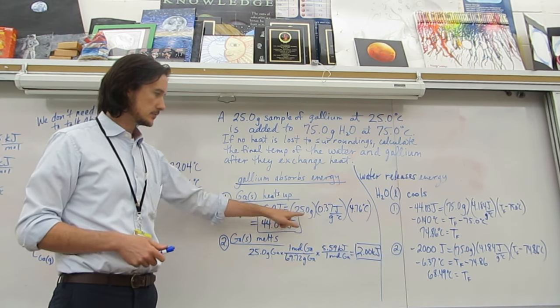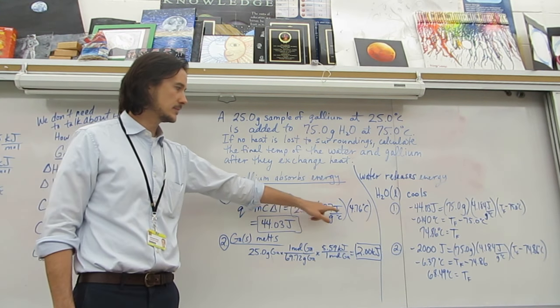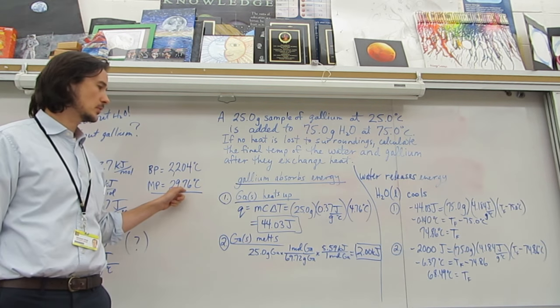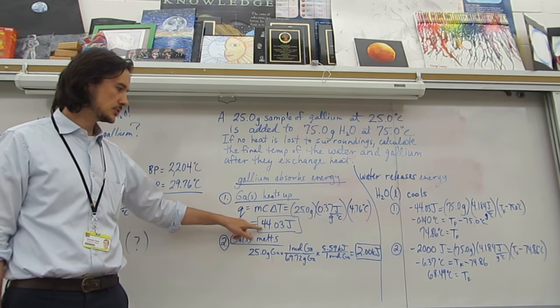We've got a mass of 25 grams, here's the specific heat 0.37, and that's the temperature change to get to the 29.76, and to do that it only takes 44.03 joules. So I just labeled that as step one.